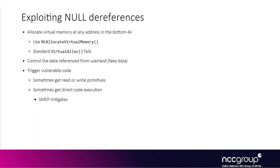Null dereferences used to be a very common kernel vulnerability type that could be exploited. A lot of null deref bugs are still being found these days, but they can't really be exploited anymore because you can't allocate the null address — the address at zero. The idea for exploiting this kind of bug was that you could trigger some kernel code path where it fails to check a pointer before accessing it, so it dereferences a null pointer. To exploit that, you would allocate your own data in userland at the null page at address zero, providing a fake kernel structure in userland memory. Often there would be a function pointer in there and you could get the kernel to execute your own code from userland while in kernel mode.